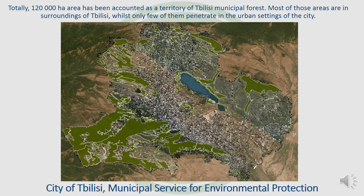Based on the comprehensive inventory, a total of around 120,000 hectares of forest was accounted for in the territory of Tbilisi. Most of the areas are in the surroundings of the city. As you can see in this aerial photo of Tbilisi, the green color shows the municipal territories of the municipal forests, which are basically surrounding the city. We also have small portions of forest which are penetrated into the urban settings of the city.